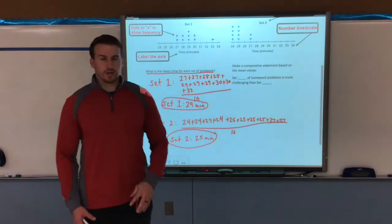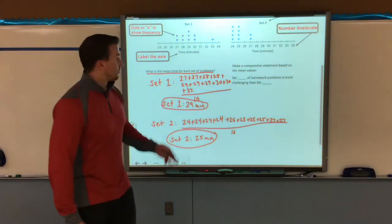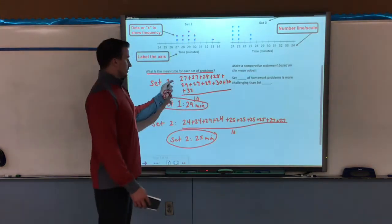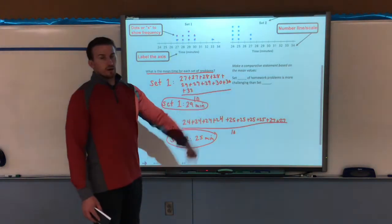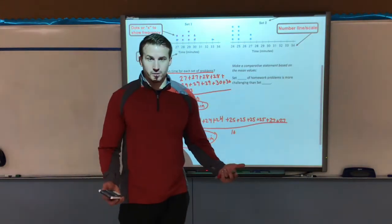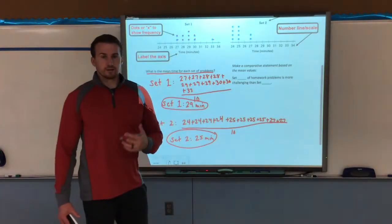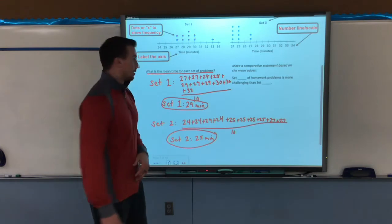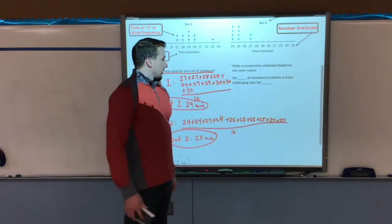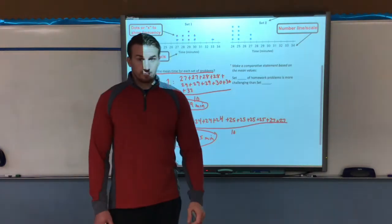Alright. So that's how you find the mean from line plots. I know it seems tedious, but write it all out because it's the easiest way to make sure you cover every single dot or x on the line plot. Don't forget to do that. Now, we can make a comparative statement based on the mean values.